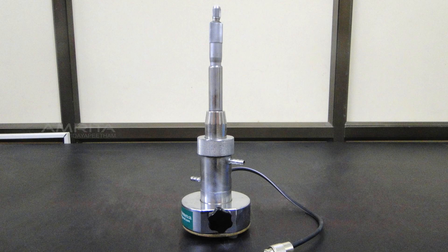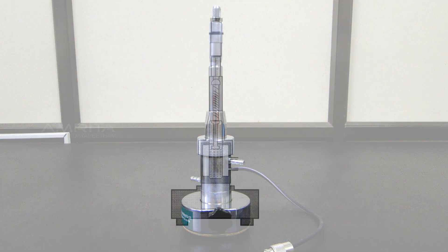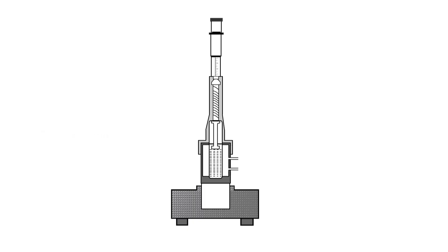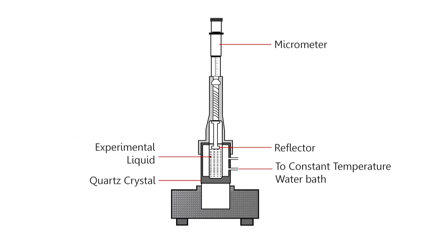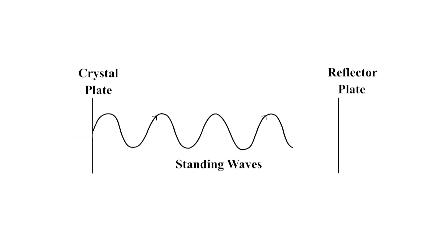In an ultrasonic interferometer, the ultrasonic waves are produced by the piezoelectric method. Ultrasonic waves of known frequency are produced by a quartz crystal that is fixed at the bottom of the ultrasonic cell. There is a movable metallic plate parallel to the quartz plate which reflects the waves. These waves superimpose and standing waves are produced in the liquid medium.